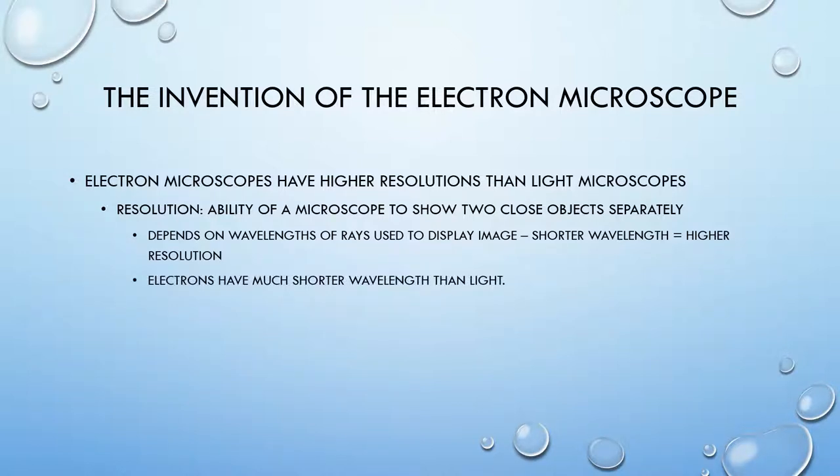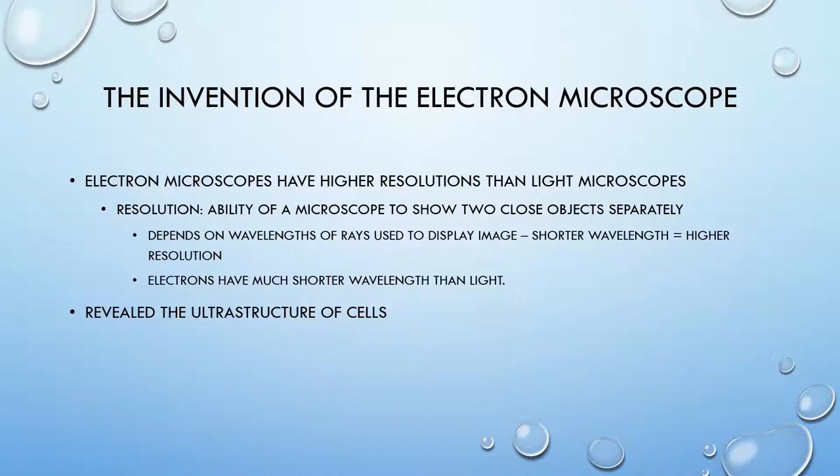Electrons have much shorter wavelength than light. Therefore, electron microscopes have much higher resolutions than light microscopes. The invention of the electron microscope revealed the ultrastructure of cells because scientists could identify small organelles that they were not able to identify with just light microscopes. This is an example of how improvements in apparatus and technology can lead to developments in scientific research.